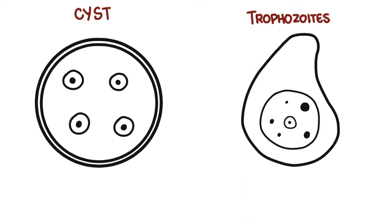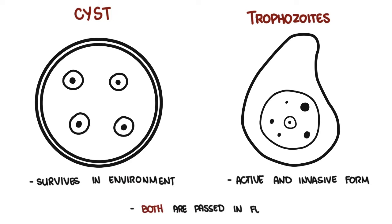The cyst forms are able to survive in the environment, and it is this form that is typically ingested by humans. Trophozoites are the active and invasive form of the parasite once in the intestine. Cysts and trophozoites are typically passed in feces.